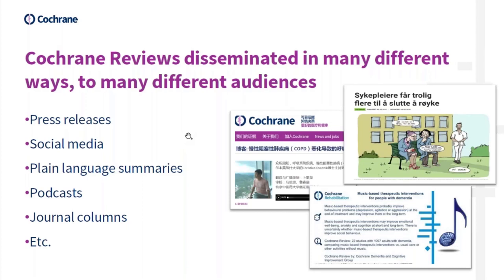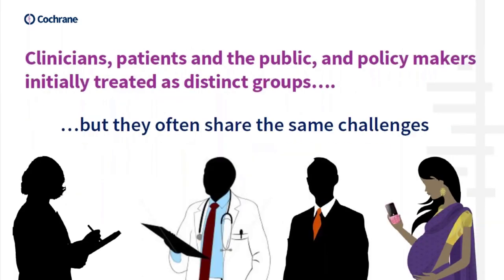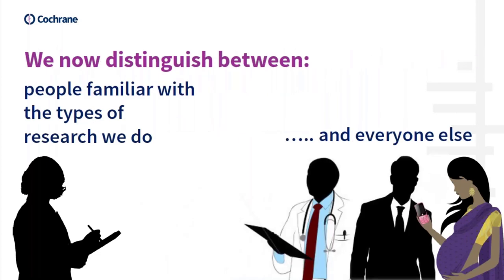In Cochrane Norway, we've been working at this for about 20 years now. So originally, when we started working with this topic, we made quite clear distinctions between clinicians as a target group, patients and the public as a target group, and policymakers. But as we carried on with this work, we did see that they were often sharing the same challenges when it came to understanding the results of Cochrane reviews. So now we basically distinguish between people who are familiar with the type of research we do and everyone else. And this is something to bear in mind when you look at the checklist.